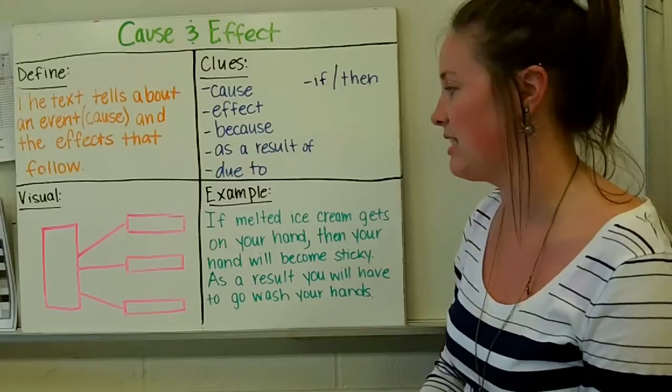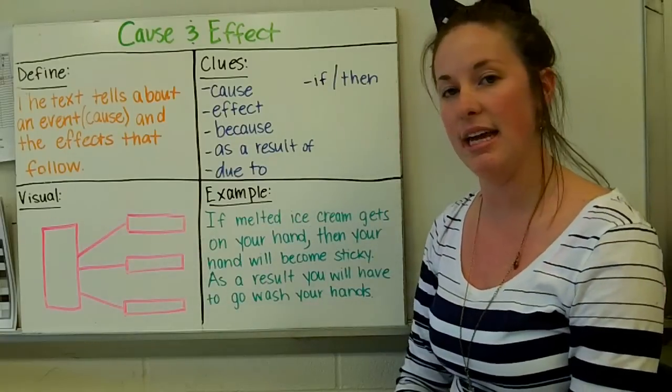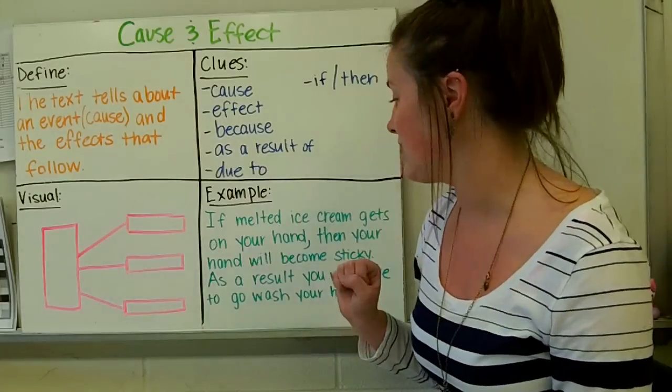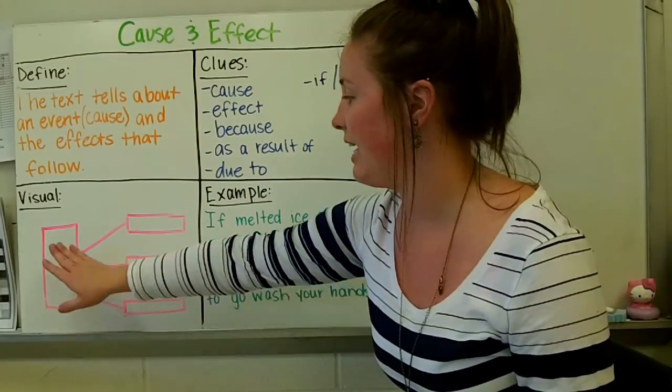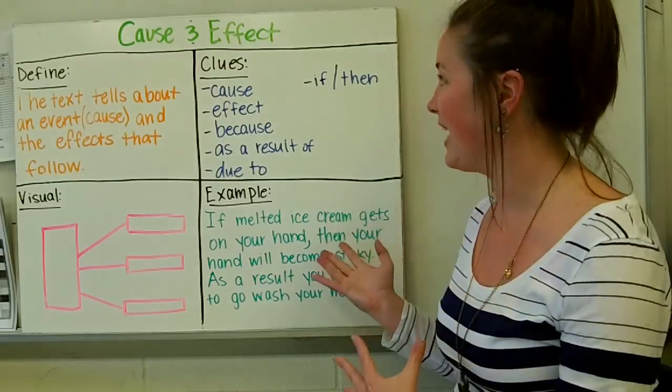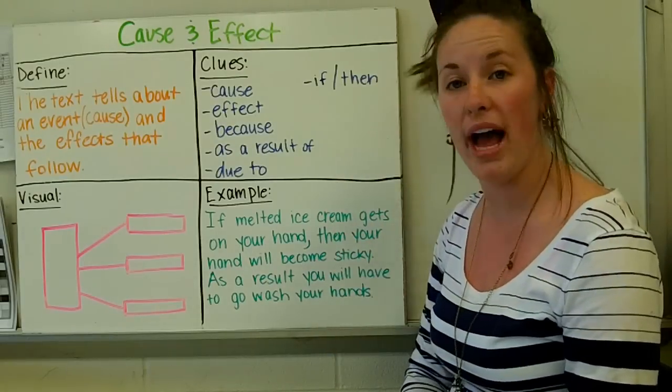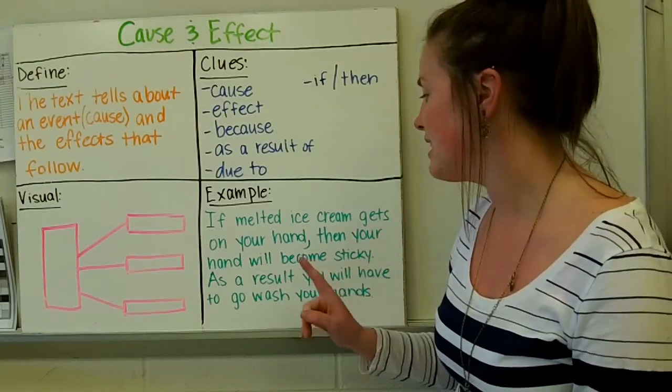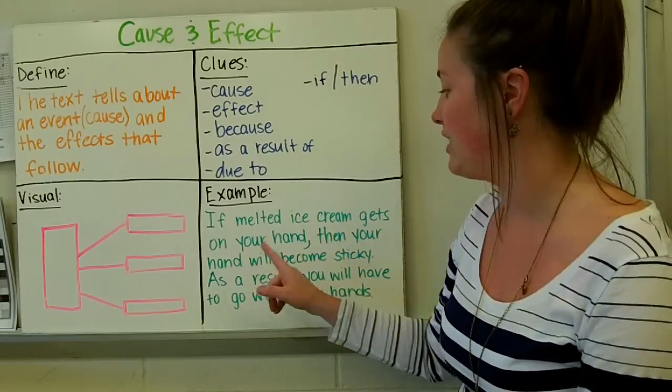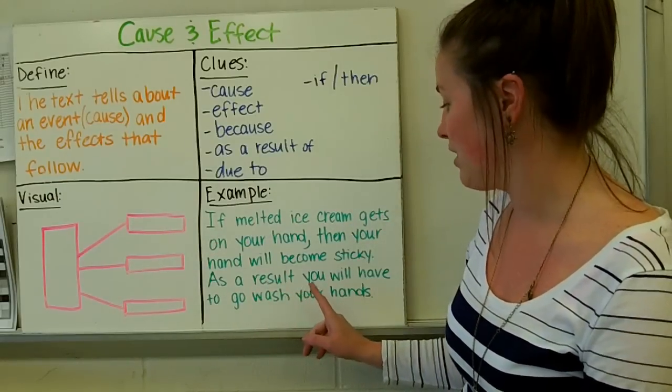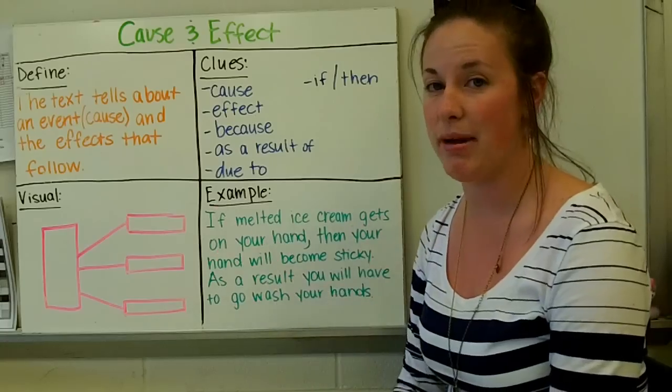So if I were filling this in, in my bubble map over here, or excuse me, in my graphic organizer, the first thing I would put in is ice cream melts. So what are my effects that I listed in here about what happens when ice cream melts? The first thing that could happen is your hand will become sticky. The second thing I could also put, that I will have to go and wash my hands.